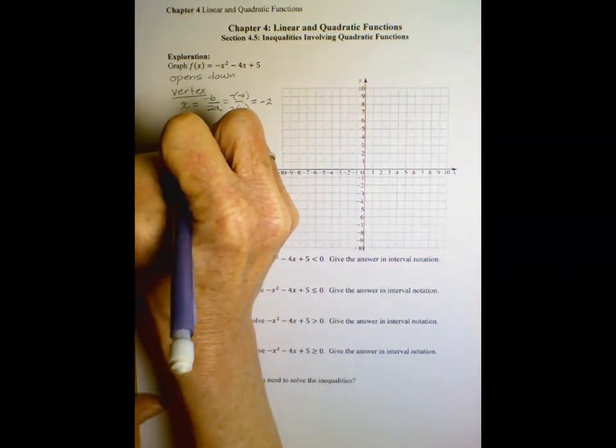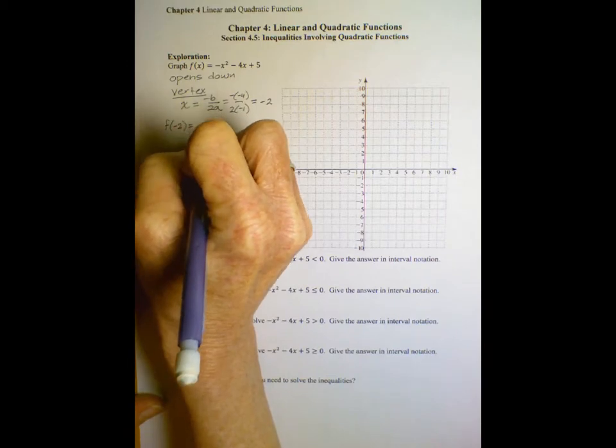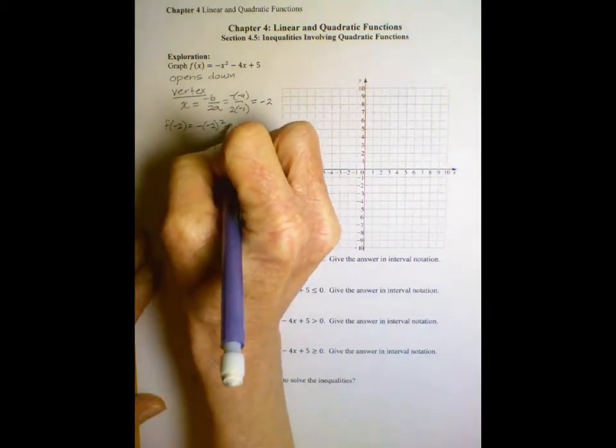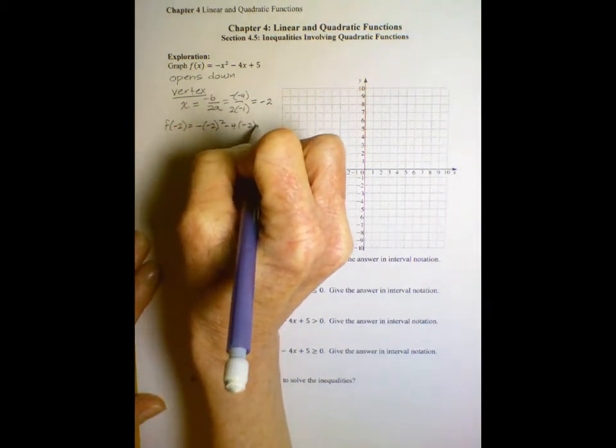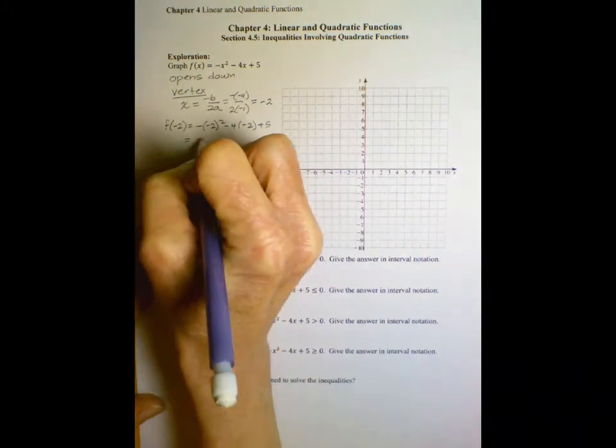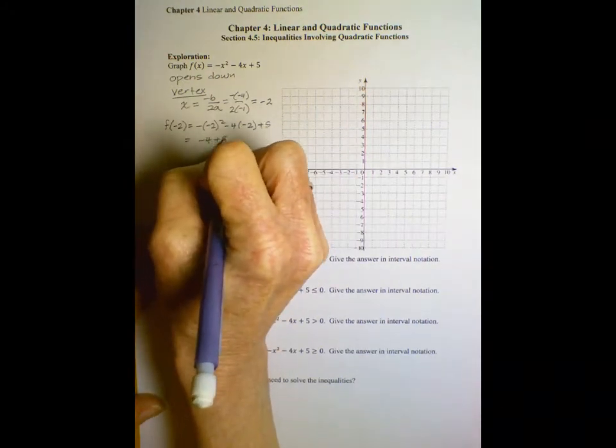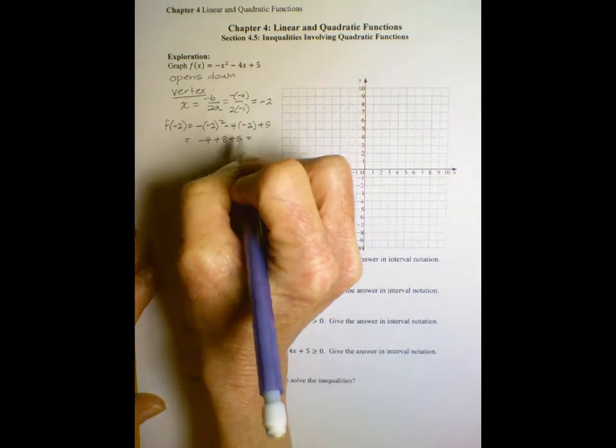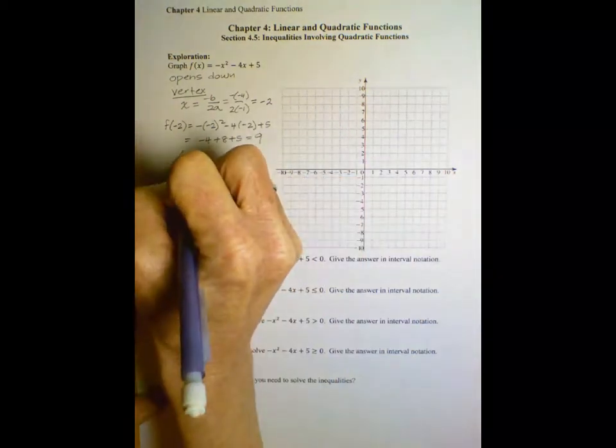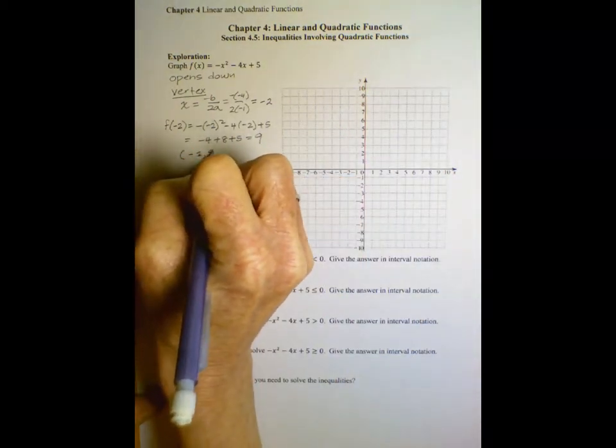We'll plug in that negative 2 to find the y coordinate of the vertex. And what do we get? Negative 4 plus 8 plus 5 or 4 plus 5 or 9. So the vertex is the point negative 2, 9.